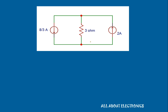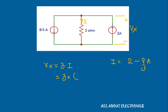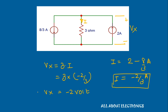Now the circuit has a 3Ω resistor in parallel with the two current sources. The voltage across the 2A current source is the voltage drop across this 3Ω resistor, so Vx = 3 × I. The current I through the 3Ω resistor is 2 − 8/3 = −2/3 A. Therefore, Vx = 3 × (−2/3) = −2V.